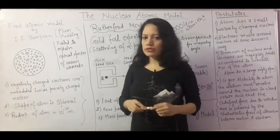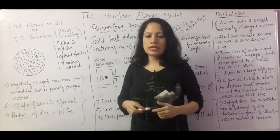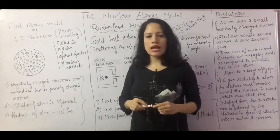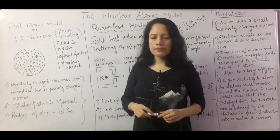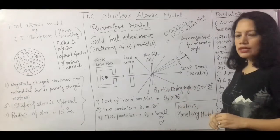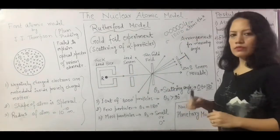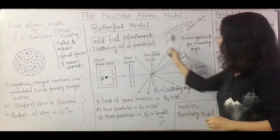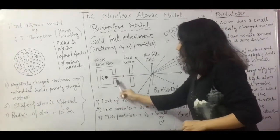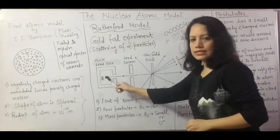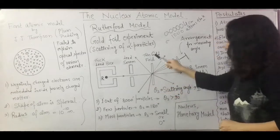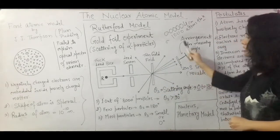Then came Rutherford's atomic model. He gave his postulates of the atom, but before giving his postulates he conducted a very famous experiment known as the alpha particle gold foil experiment. In his experiment he took gold foil as the target material and a radioactive material which was emitting alpha particles. There was a thick lead box inside which a radioactive material was kept which was producing alpha particles, then there was a lead screen, a thin gold foil, and a zinc sulphide movable screen.